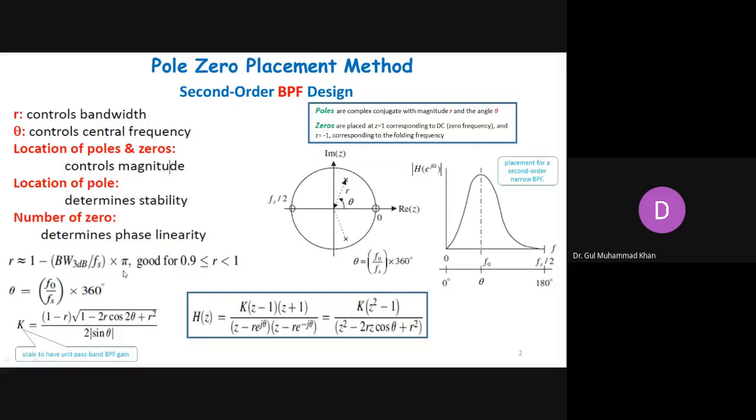This is the rule of thumb for how you will calculate the value of R in order to design any filter. So 1 minus the bandwidth, 3 dB bandwidth. 3 dB bandwidth is when the value goes down by 0.707 of the maximum value. And Fs represents the sampling frequency multiplied by pi. So this actually gives you the value of R, where you are going to place the pole. And the good value is usually between 0.9 and 1.